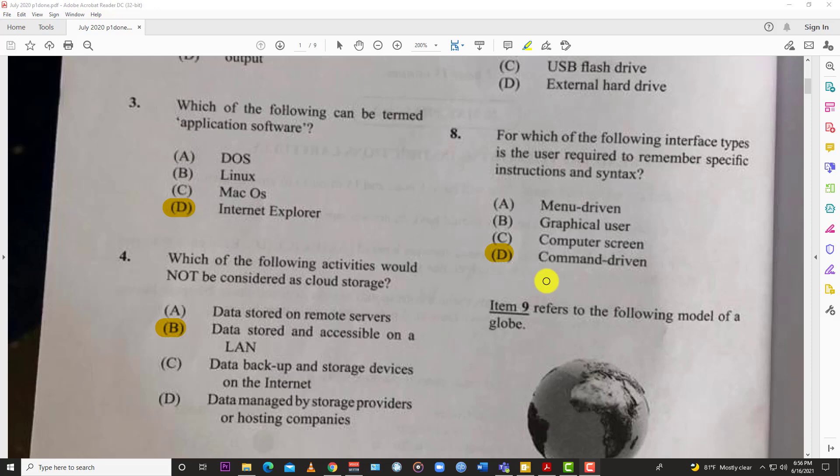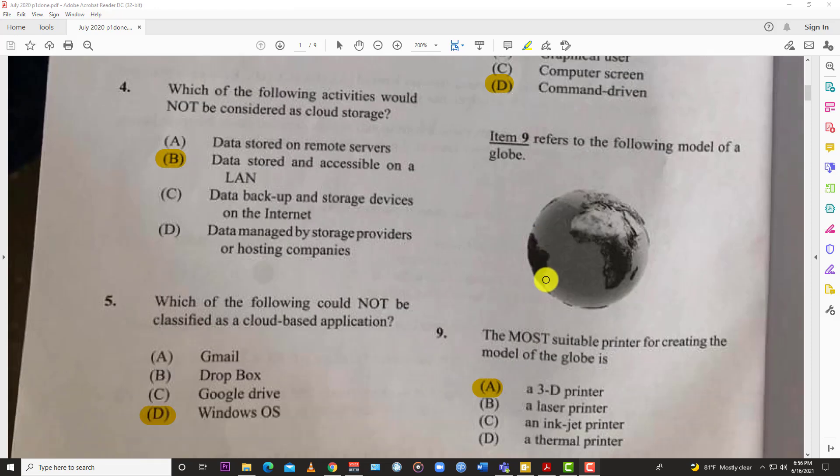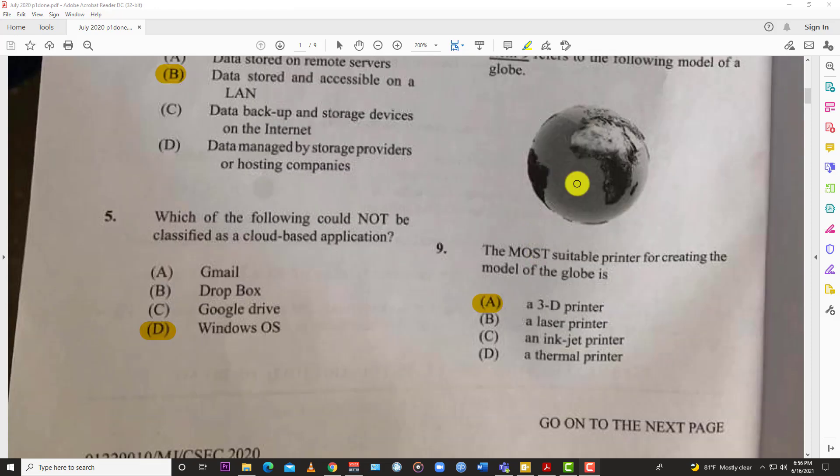Number nine refers to the following model of a globe. The most suitable printer for creating the model of the globe is of course a 3D printer. This is a 3D image. All these other ones give you basically a flat plane, a 2D image, but a 3D printer gives you a 3D image.